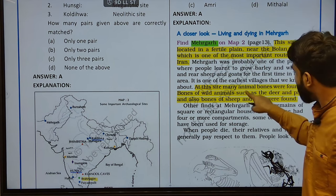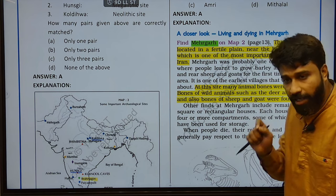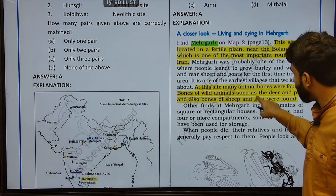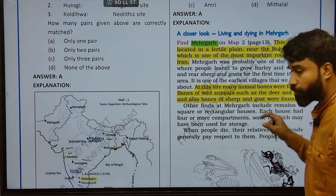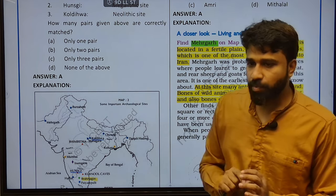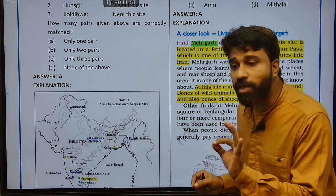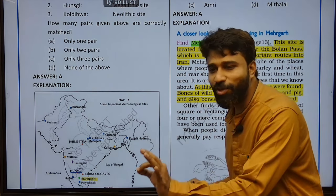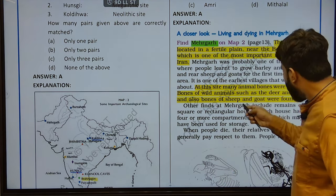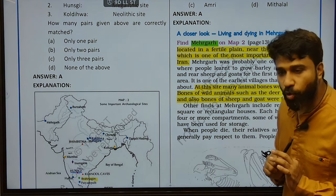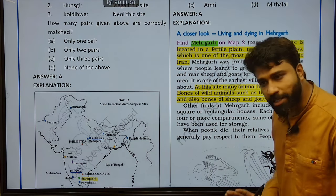This site had many animal bones — bones of wild animals such as deer and pig, and also bones of sheep and goat were found. These animals were found in prehistoric times, especially in Neolithic times. In Neolithic times, you used to farm these animals — sheep and goat. It means sheep rearing and cattle rearing were started during Neolithic times itself.